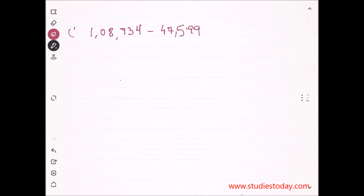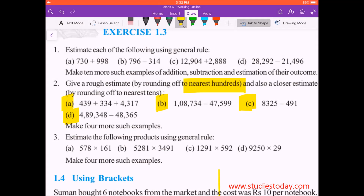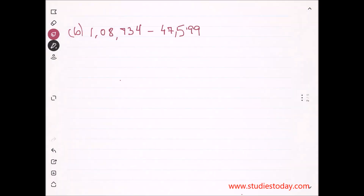Now we move to the next question, which is Part B. We can see here: 1,08,734 minus 47,599. Right now we are making a rough estimate by rounding off to nearest hundreds.